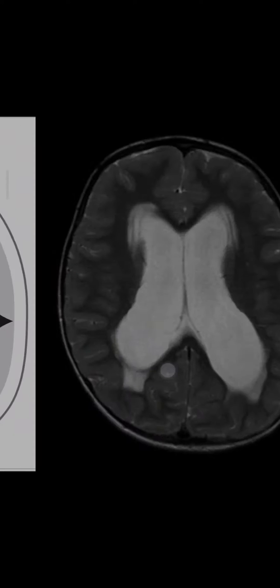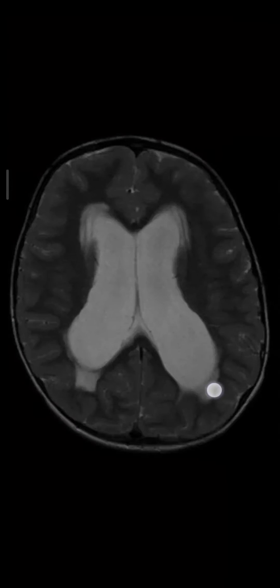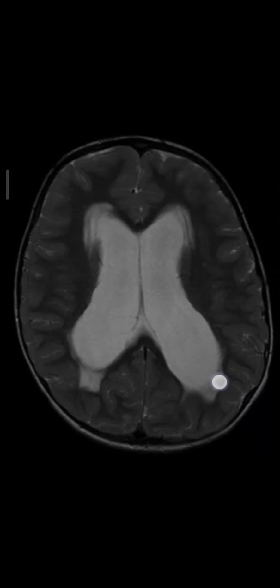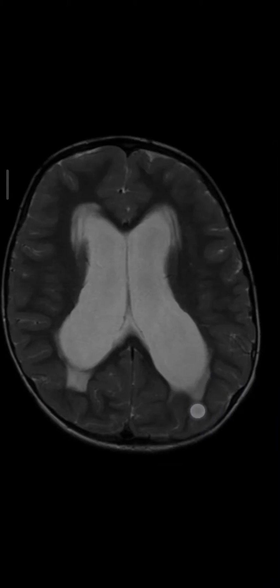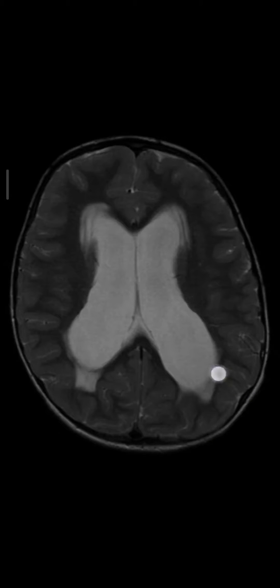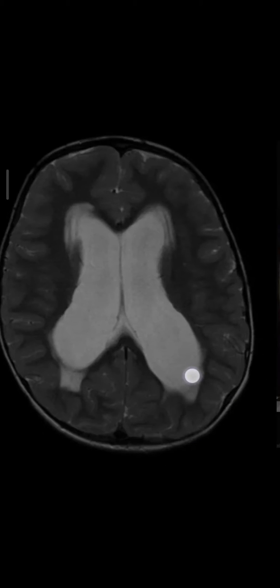Presence of periventricular ooze — seen as hyperintensity on MRI T2-weighted images and hypolucency on CT scan.